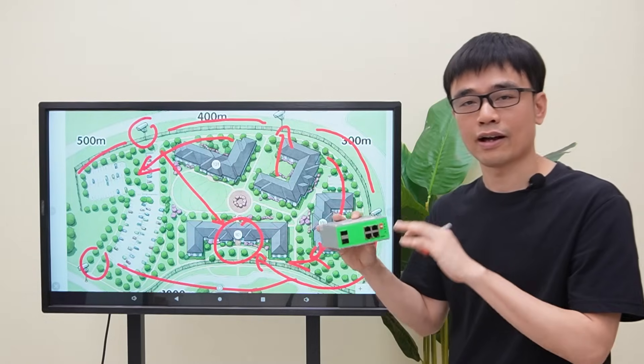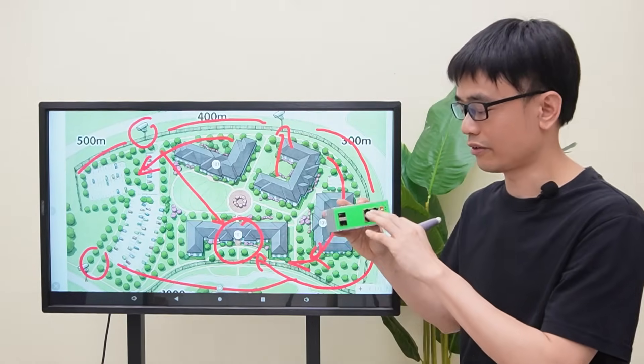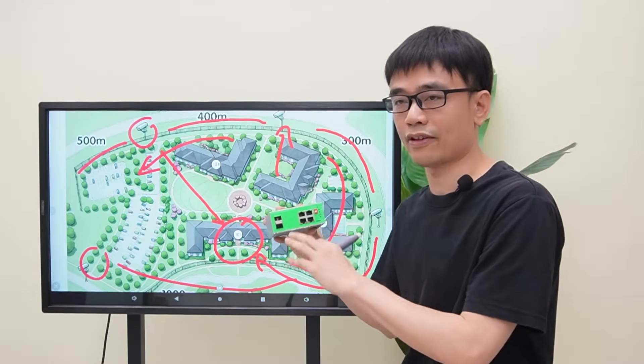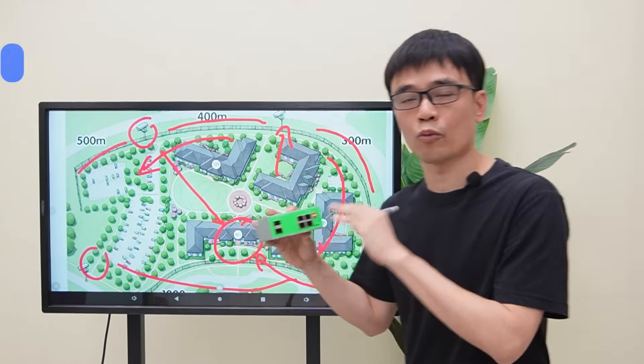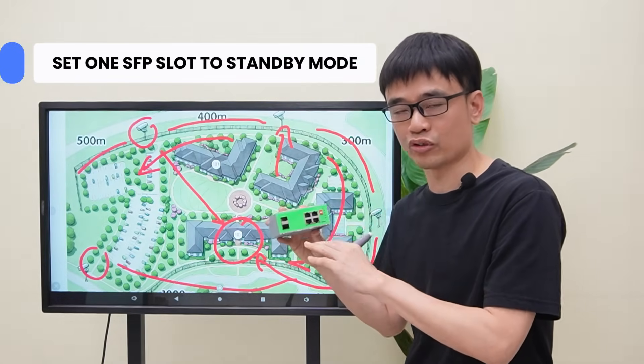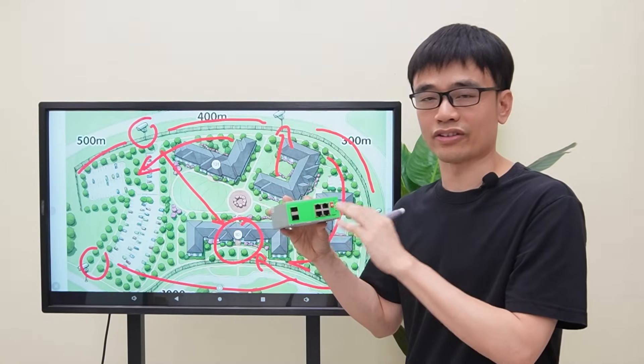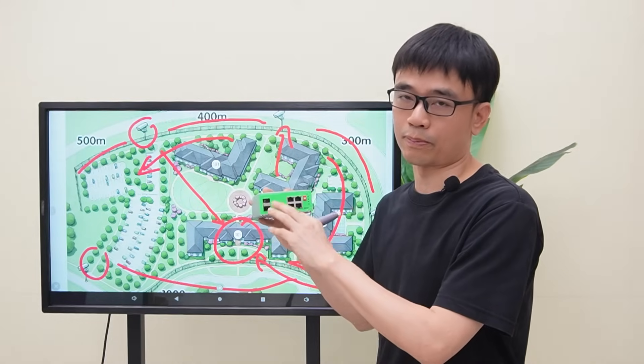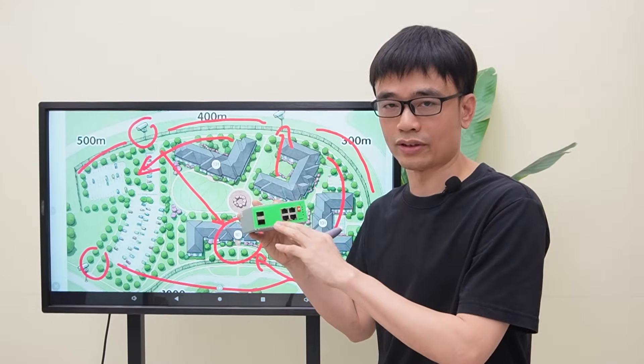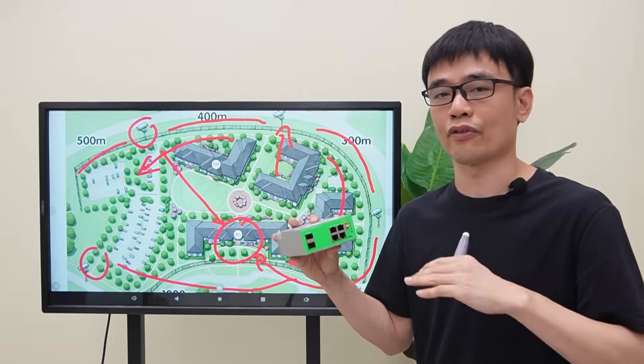At the beginning, the eRPS aggregator will monitor the status of these two SFP slots and set one SFP slot in standby mode. It will block signal transmission on one of the SFP slots and keep the other SFP slot running.